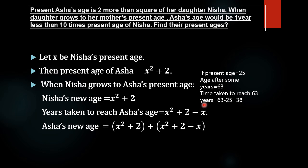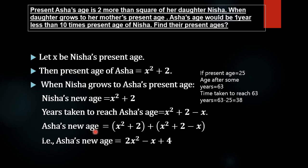The years taken by Nisha to reach Asha's age is x² + 2 minus x. This same amount of time will be added to Asha's current age to get Asha's new age. Asha's present age is x² + 2, and adding the time x² + 2 minus x gives the new Asha's age. By simplifying, we get the new Asha's age equal to 2x² minus x plus 4.